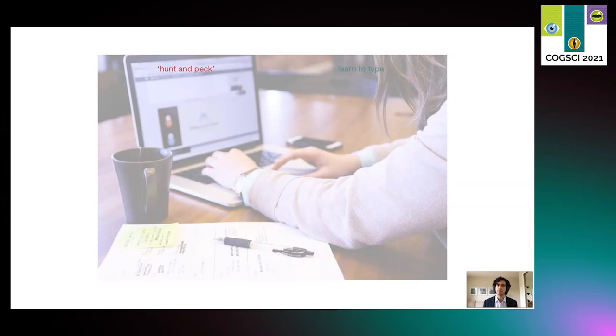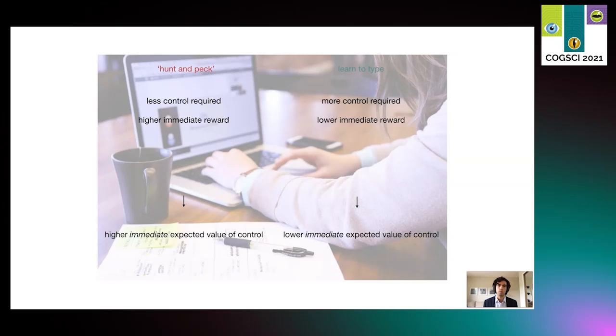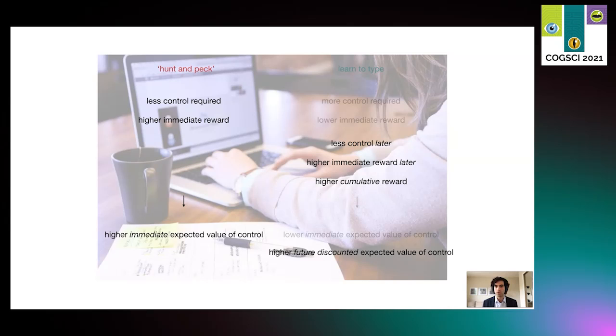So what does this mean in terms of the expected value of control? Well, hunting and pecking requires less control and leads to a higher immediate reward, meaning a higher immediate expected value of control, which refers to the reward per control allocated. Learning to type requires more control and leads to a lower immediate reward, meaning a lower immediate expected value of control. However, after having learned, it will require less control and lead to both a higher immediate reward and a higher cumulative reward. Thus, the meta decision to learn to type must take into account the predicted future benefits of typing properly. If it does take into account those future benefits, it can explain, in this situation, the paradox of effort. Why one would invest more effort despite even lower immediate rewards?